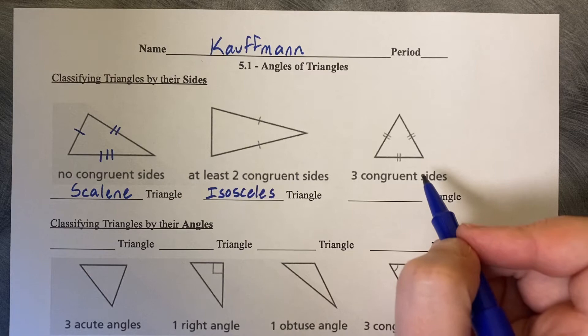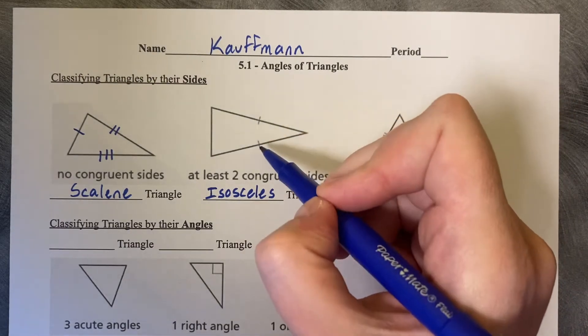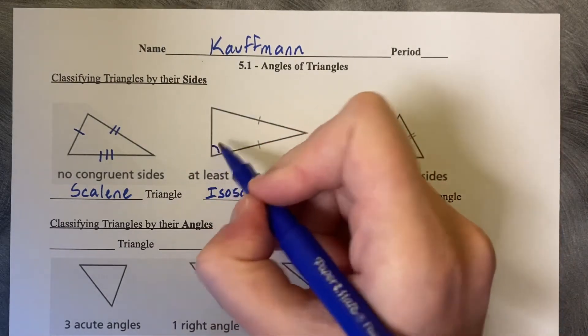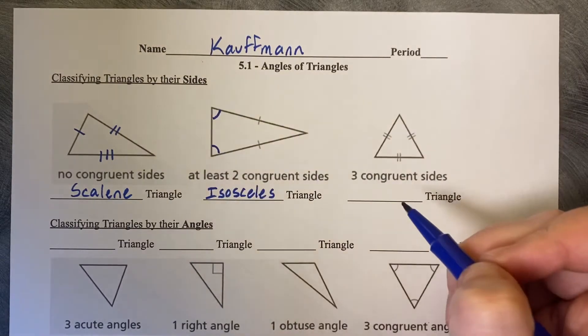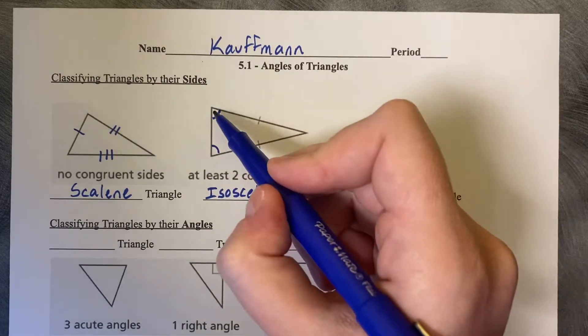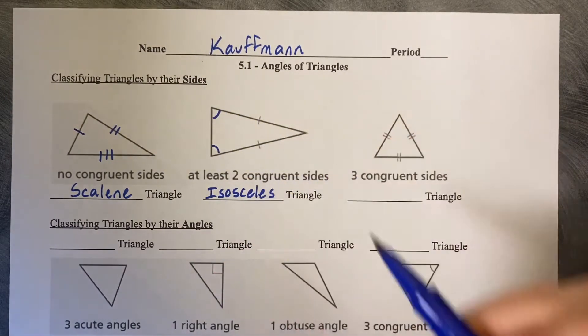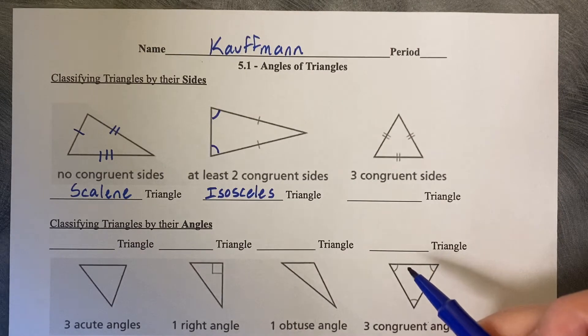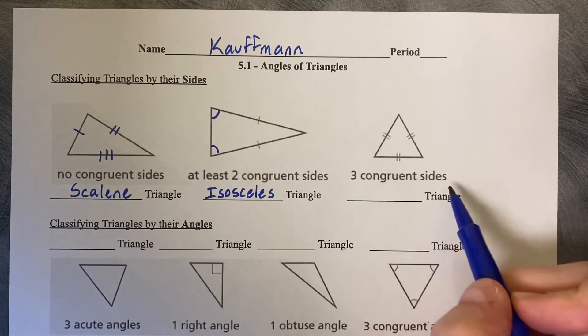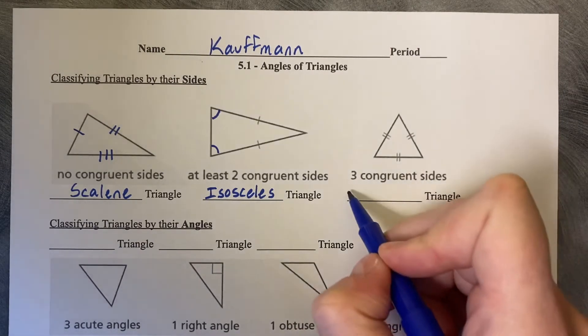Something to note about isosceles triangles is if they have two congruent sides, then their base angles are also congruent. So the base angles are congruent and the opposite sides are congruent. Now if you have three congruent sides, this is called an equilateral.